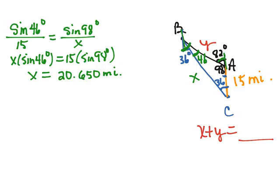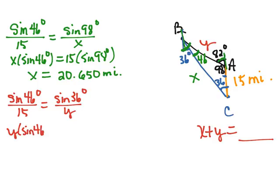Next if we want to find Y, we can do the same process. We're going to say the sine of 46 degrees over 15 is equal to the sine of 36 degrees divided by Y. So Y times the sine of 46 degrees equals 15 times the sine of 36 degrees.